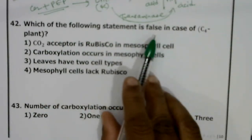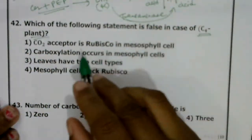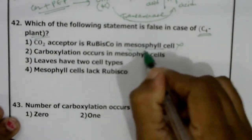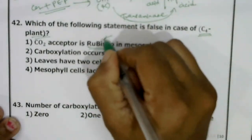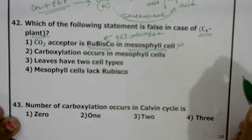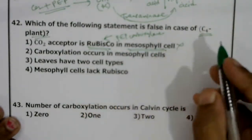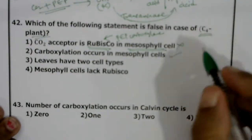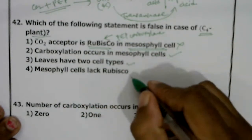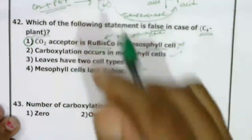Which statement is false in case of C4 plants: CO2 acceptor is Rubisco in mesophyll cell; carboxylation occurs in mesophyll cell; leaves have two types of cells; mesophyll cells lack Rubisco? The false statement is the first one — inside mesophyll cells, the CO2 acceptor is PEP carboxylase, not Rubisco. Rubisco is present in bundle sheath cells. The other statements are correct. Correct answer: first option.